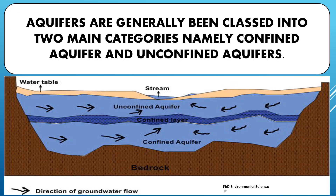Aquifers are generally classified into two main categories: confined aquifers and unconfined aquifers. This image illustrates groundwater flow in different types of aquifers. The water table represents the upper surface of the zone of saturation where soils or rocks are fully saturated. A stream is a body of surface water shown above the water table that can interact with groundwater, either gaining water from it or losing water to it. An unconfined aquifer is the upper layer of groundwater directly below the water table, with no impermeable layer restricting the flow of water from above.